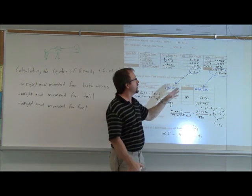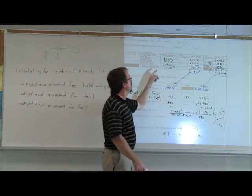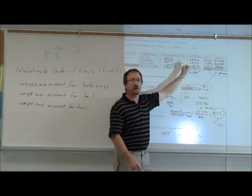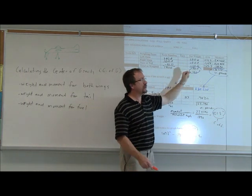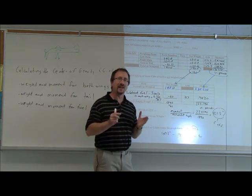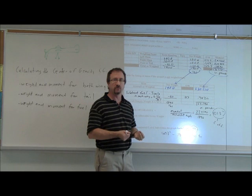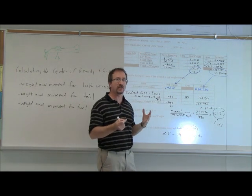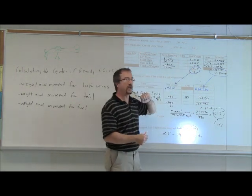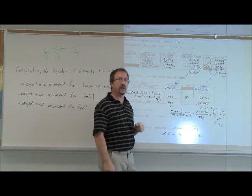To calculate the moment, we need to know what the arm of each measurement is. For each wing, the arm was 129.4 inches, and for the tail, it was 285.9. That number came from the manual with the aircraft. So, it told us, we didn't measure it, it told us 129.4 for the wings, 285.9 for the tail.